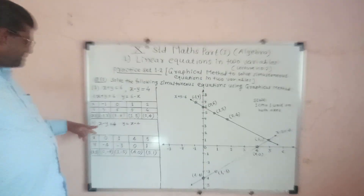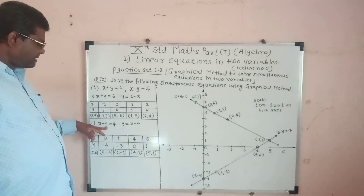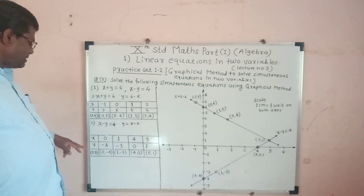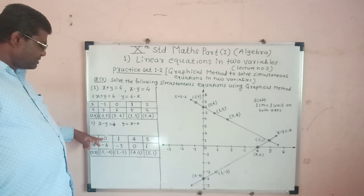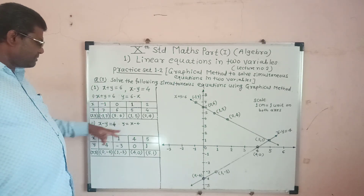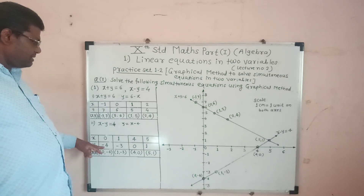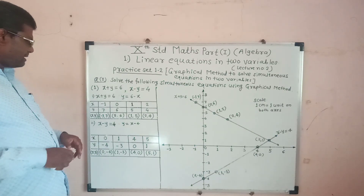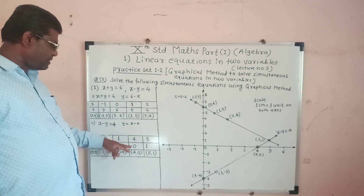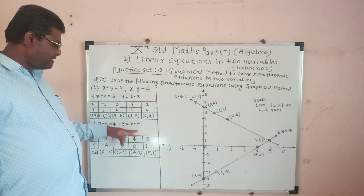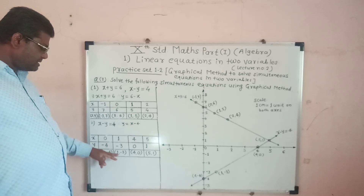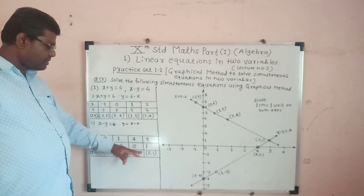Now consider the second equation: x minus y is equal to 4. From this, y is equal to x minus 4. We choose values of x as 0, 1, 4, and 5. When x equals 0, y equals minus 4. When x equals 1, y equals minus 3. When x equals 4, y equals 0. When x equals 5, y equals 1. Ordered pairs: (0, −4), (1, −3), (4, 0), and (5, 1).